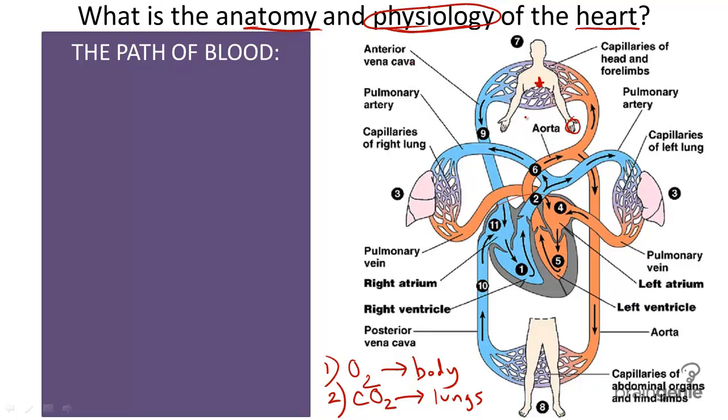It is made of cardiac muscle, and the rate at which your heart pumps is controlled by the brain stem in the brain. And it's completely involuntary.